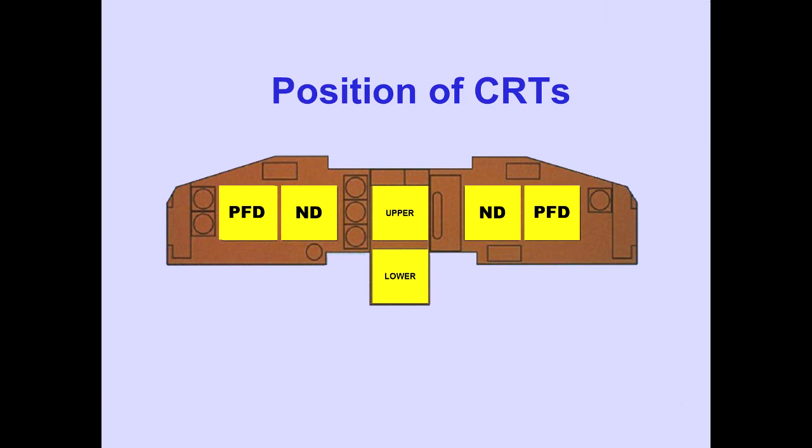EICAS is displayed on the upper and lower CRTs located on the center panel. The location of a display can be changed to accommodate a CRT malfunction.